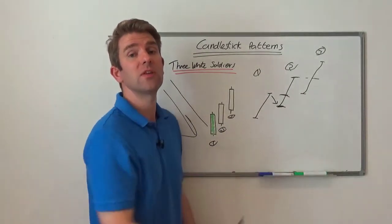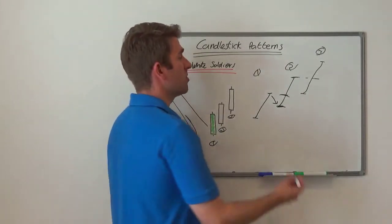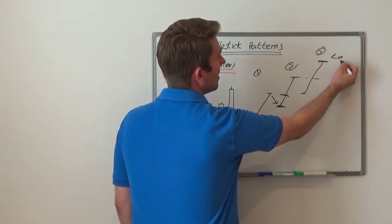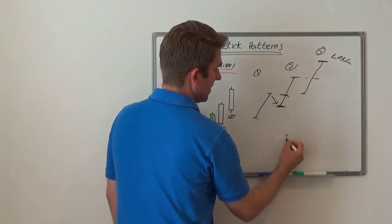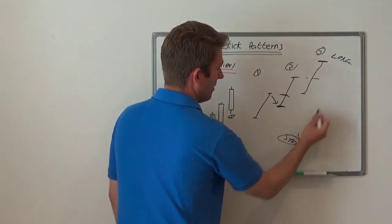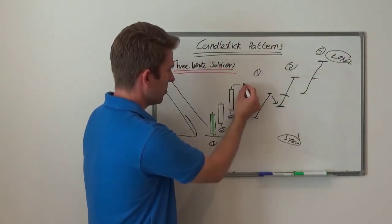Or do I want to take the official line, which is we wait for the third one and then we go long here? And our stop is here under the low of the initial pattern. So around here, so there's your long here, and there's your stop here.